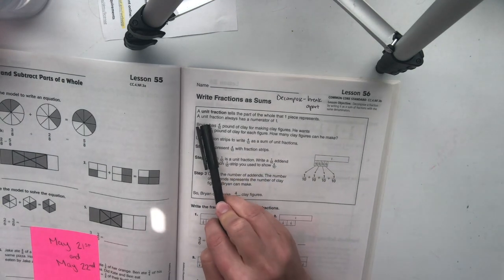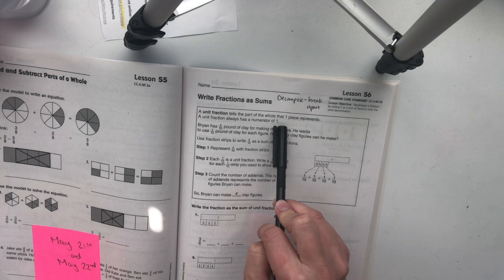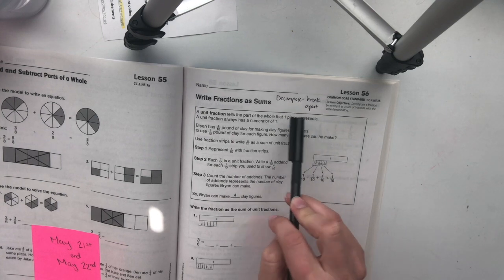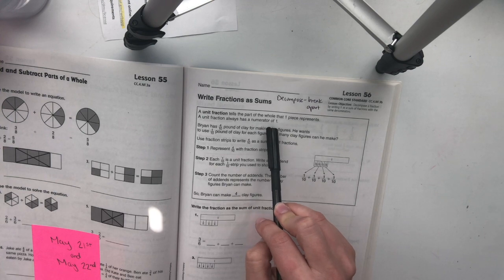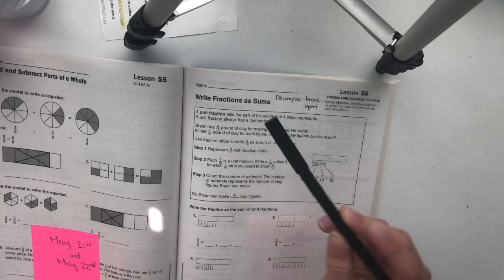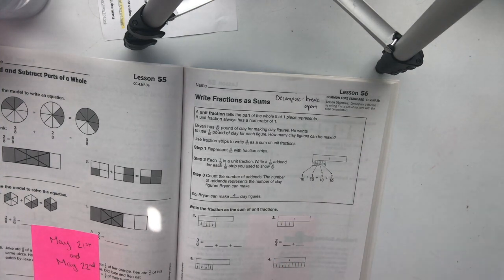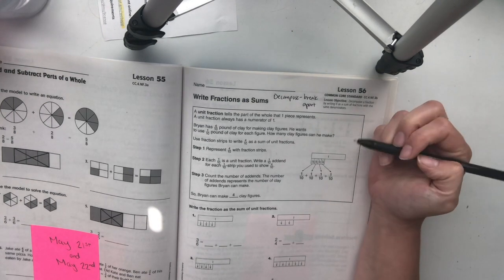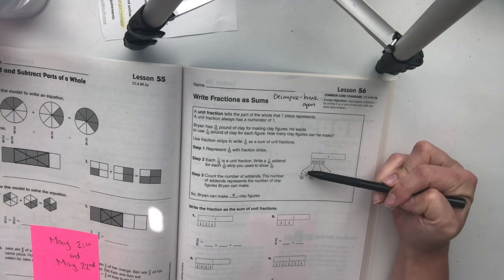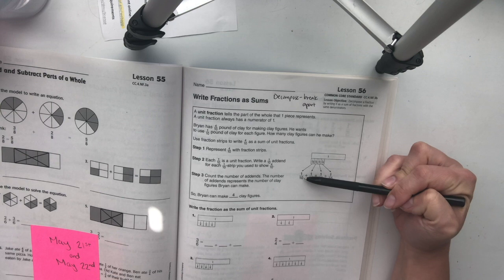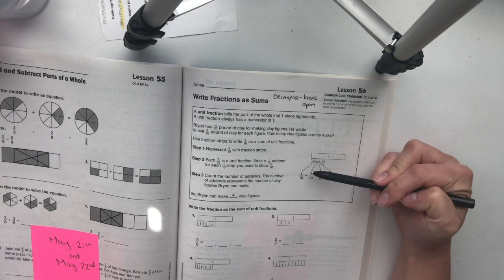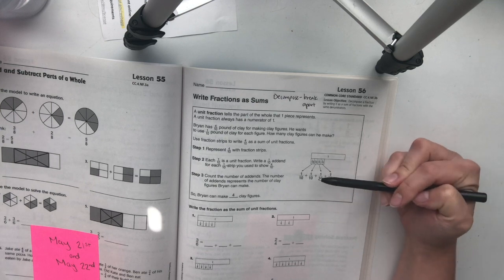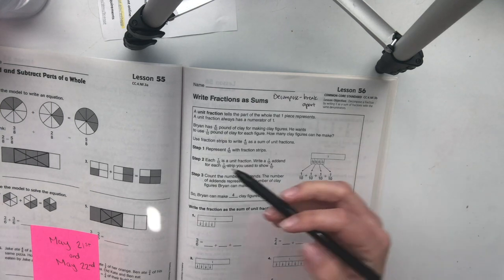So a unit fraction tells the part of a whole that one piece represents. A unit fraction always has a number of 1. So if we're looking at a unit fraction, in this case, we're looking at the unit fraction of 1 tenth. So any number with 1 in the numerator is a unit fraction. Alright. So let's keep going.